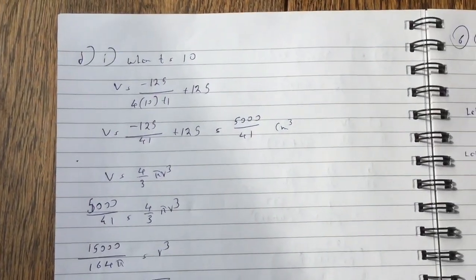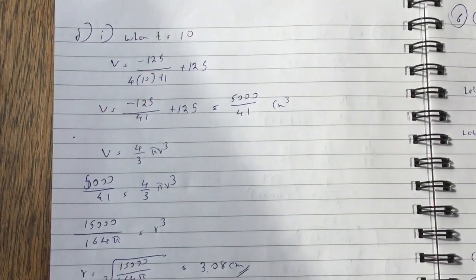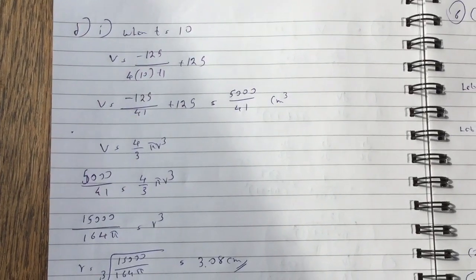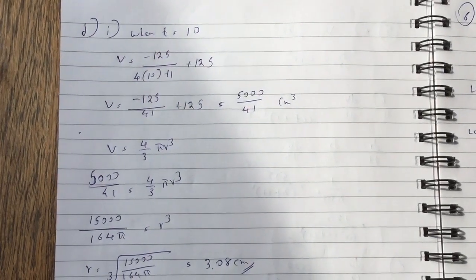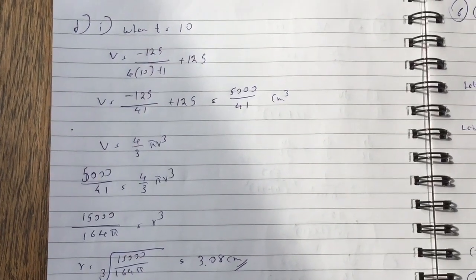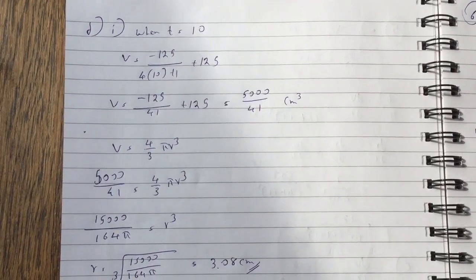Part d(i), when t equals to 10, volume equals to minus 125 over 4 bracket 10 plus 1 plus 125. That gives you volume equals to 5,000 over 41 centimetre cubes.